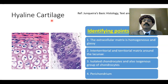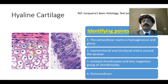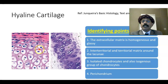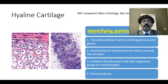So what are the identifying points? We have the perichondrium, the extracellular matrix, the interterritorial matrix, and also the territorial matrix. The territorial matrix is around the chondrocytes. The interterritorial matrix is in between the isogenous groups of the chondrocytes.